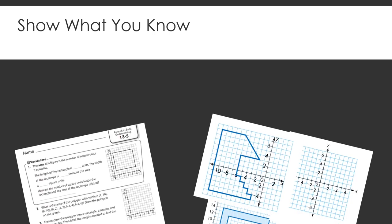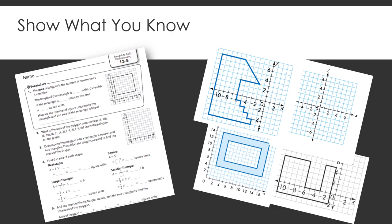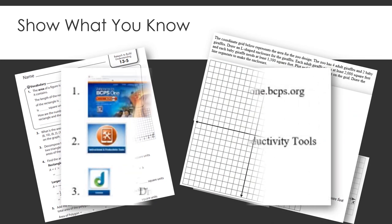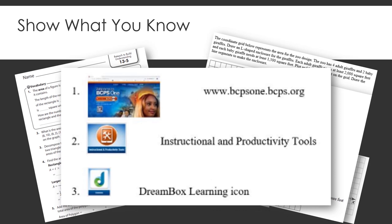If you have access, feel free to work through the triad section and when you are ready and comfortable, check out the show what you know section and complete the assignment there. If you do have access, you should be completing DreamBox lessons, about 6 to 8 lessons per week. Remember, you first need to log into BCPS using your own username and password. Then, access DreamBox through the instructional and productivity tools icon.